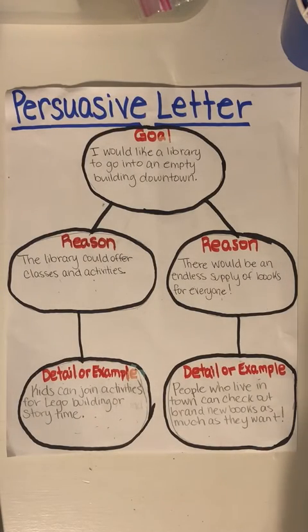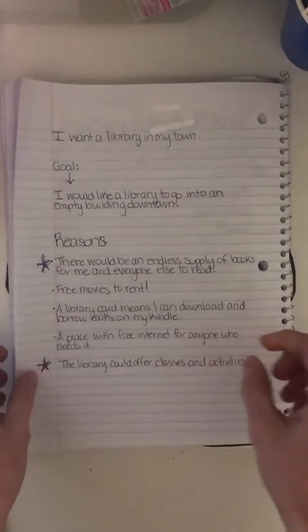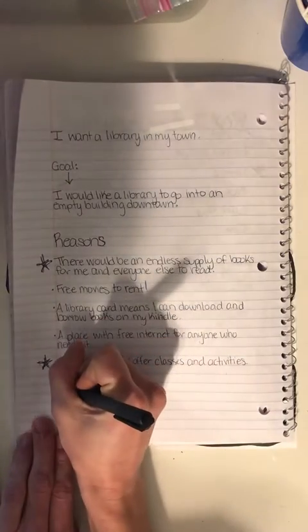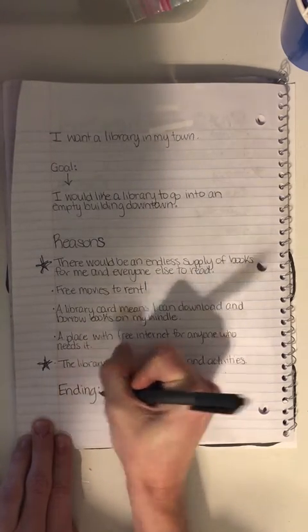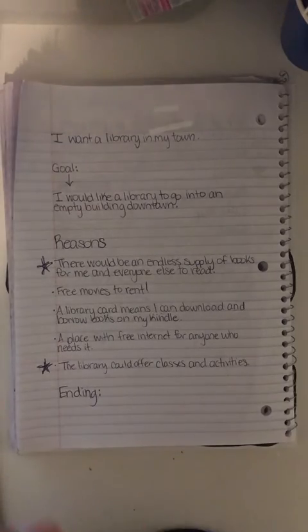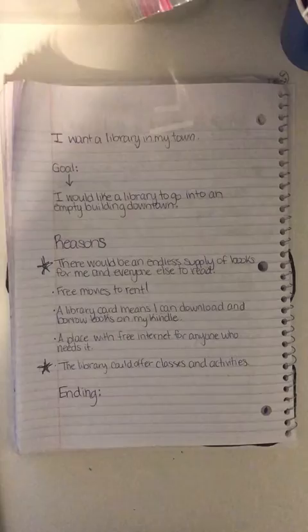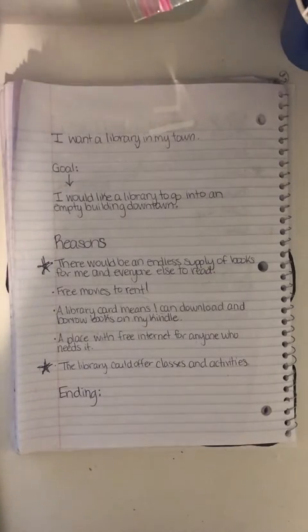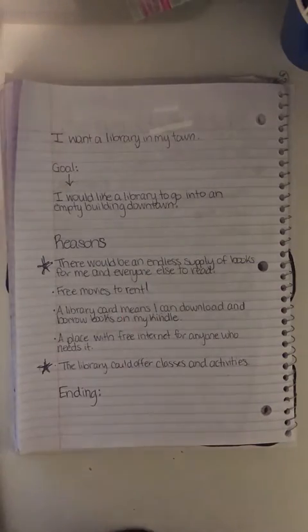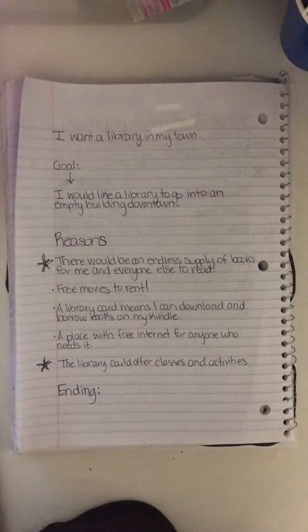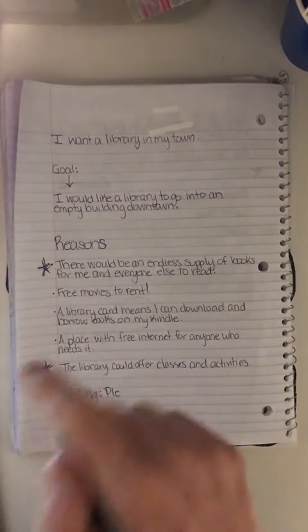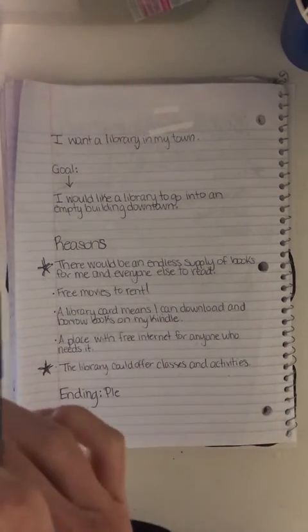So I'm going to show you my writing, what this already looks like. I'm going to make a new line right here where it says 'ending.' And my ending is going to be where I restate my goal, or I repeat my goal, but using different words. So my goal is that I would like a library to go into an empty building downtown, so I need to say this but in a different way.